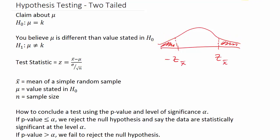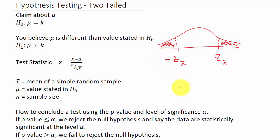If we get a positive Z value, we find the area that Z is greater than that number — that gives us the right-tail area — and then we multiply it times two because we have to add the other tail's area as well.